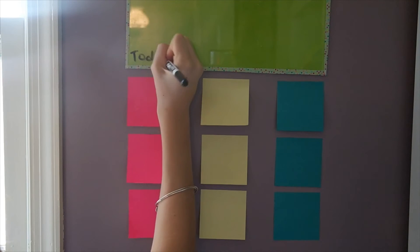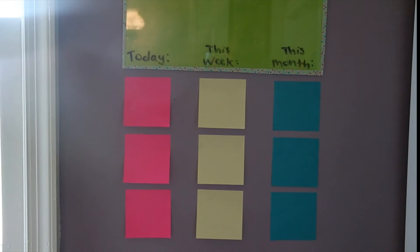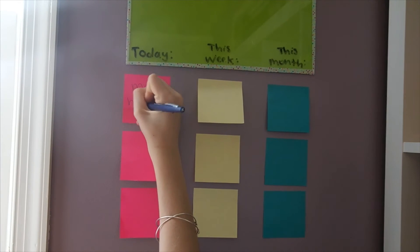Above your sticky notes, take a dry erase marker and write on your board today, this week, and this month. This way you know when you need to get what done.